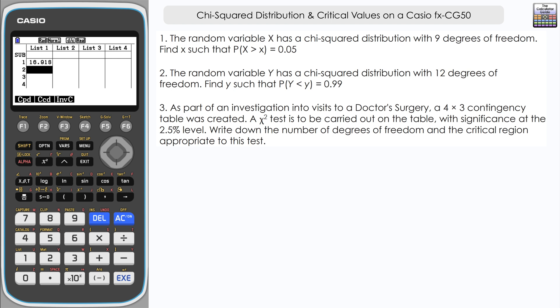Now notice how in the probability there we have a random variable capital Y is less than little Y, the value that we're trying to find from the table. When we think about the chi-squared distribution, we're thinking about the probability of exceeding those values.